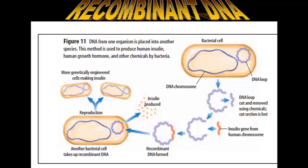Before recombinant DNA, insulin was produced by being extracted from pigs and cattle. Since we're all mammals, there was some continuity where we could use that — they would take the insulin from those animals, purify it, and use it for human purposes. However, that was an expensive endeavor. It's also cow and pig insulin, so it's not a 100% match and didn't work the best, but it was the best that we had. With recombinant DNA, we can now program bacteria to produce human insulin and make a lot of it in a shorter period of time.